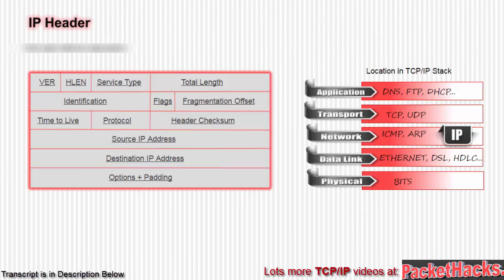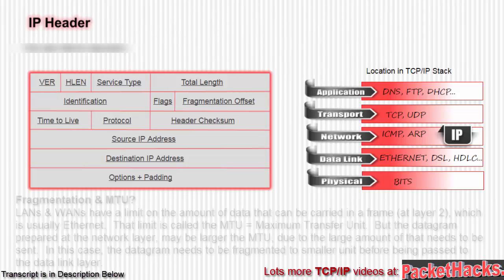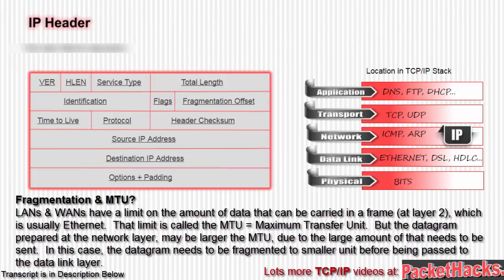We've glossed over two important terms: fragmentation and MTU. LANs have a limit on the amount of data that can be carried in a frame at layer 2, which is usually Ethernet. That limit is called the MTU, or maximum transfer unit.